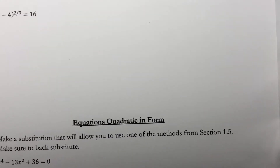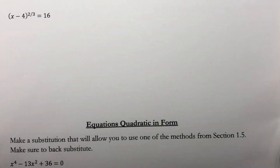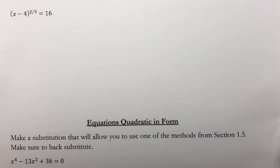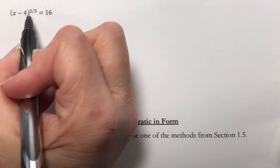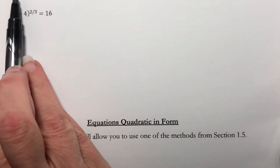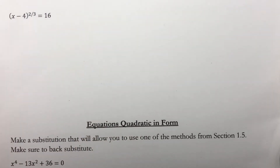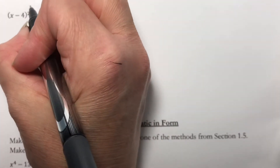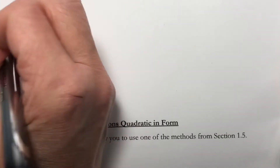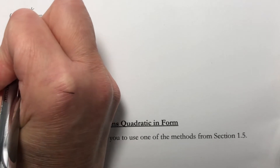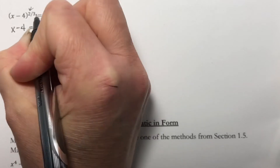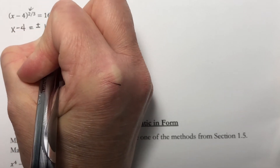Now let's do (x minus 4) to the 2/3 equals 16. I have something raised to a fractional exponent and that something is by itself — it's more complicated than just an x, but it is still by itself. This numerator is even, so I have to worry about a plus or minus. This is going to be x minus 4 equals plus or minus 16 to the 3/2 power.